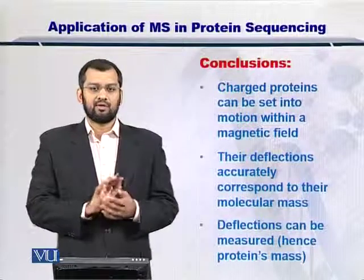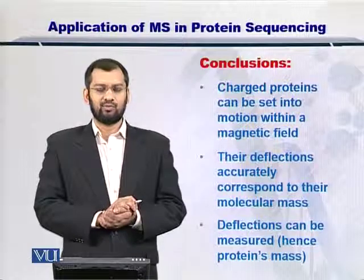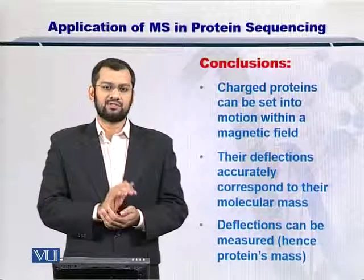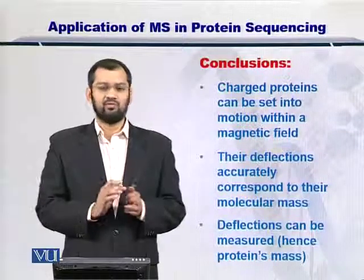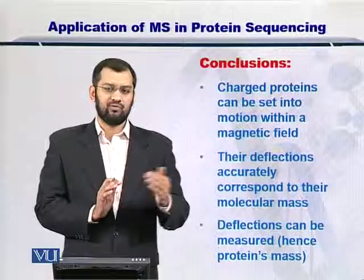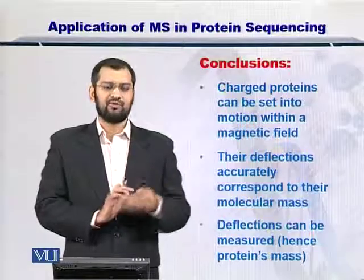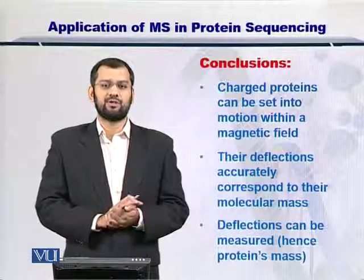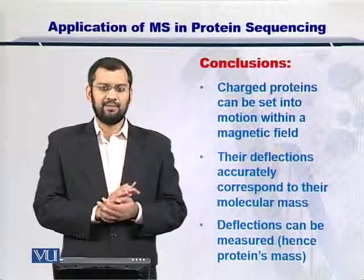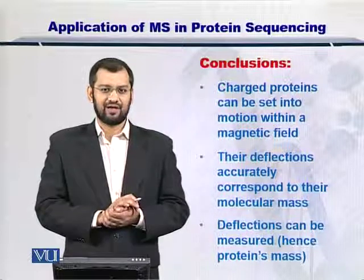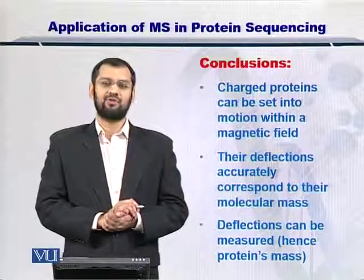The take-home message from this introduction to mass spectrometry in sequencing proteins: first, you have to charge the protein. Once the protein carries a charge, it can move in a magnetic field and will therefore be deflected to a certain degree — and that degree is proportional to its mass. Moreover, these deflections can be measured, and once you can measure them, you can determine the mass of these proteins, onwards for sequencing.